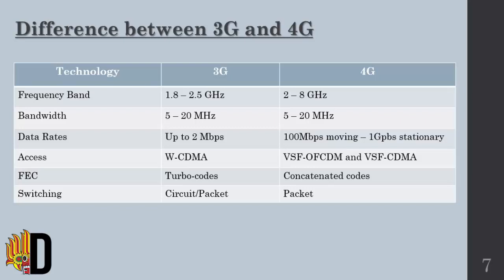4G only uses W-CDMA, but 3G uses VSF-CDMA and VSF-CDME as access technologies. 4G uses turbo codes as forward error correction, while 3G uses concatenated codes. 3G uses packet switching method, and 4G uses both packet switching and circuit switching methods.